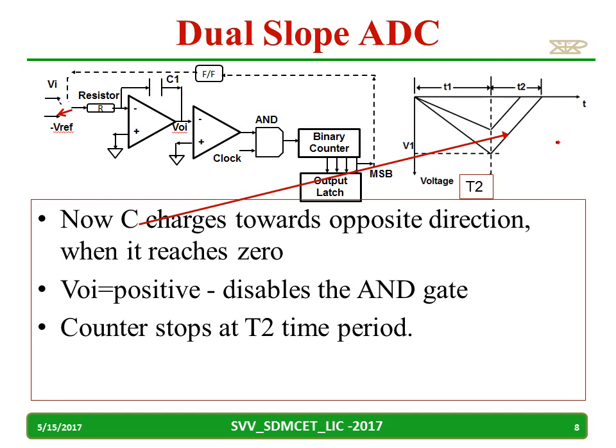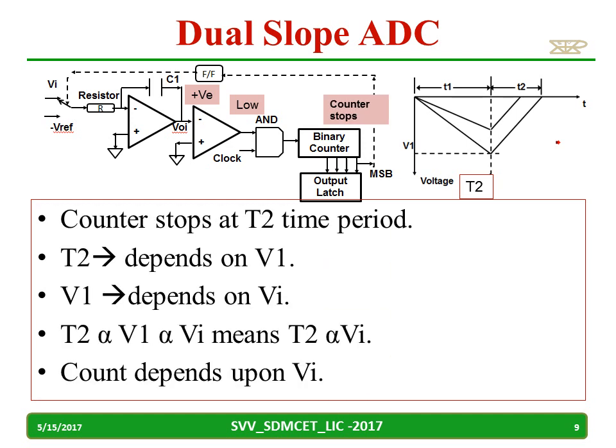Because of the overflow, the switch is connected to V reference, and the capacitor starts charging in the opposite direction. When the output reaches 0 and goes slightly positive, VI becomes positive, which disables the AND gate — clocks will not reach the counter and the counter stops counting. Hence T2 is directly proportional to VI, and the counter output directly depends on VI. Whatever the binary counter output is, it depends on the input VI.